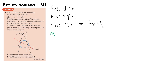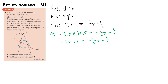First, considering where x plus 3 is positive, we have minus 3 times (x plus 3) plus 15 equals minus 3 quarters x plus 3 halves. Expanding the brackets gives minus 3x minus 9 plus 15, so plus 6, equals minus 3 quarters x plus 3 halves. Rearranging, we get 9 quarters x on the left and 9 halves on the right.